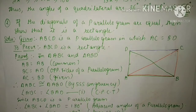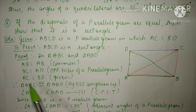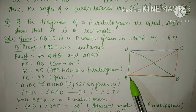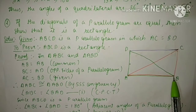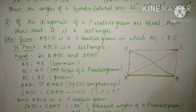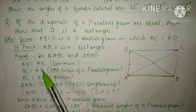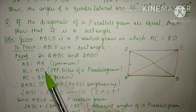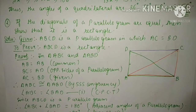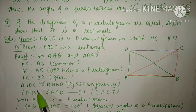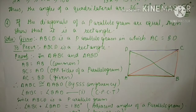So this we have written in the reason. Next, AC equals BD — this is given to us that the diagonals are equal, so we write 'given.' So by SSS congruency, triangle ABC is congruent to triangle ABD.